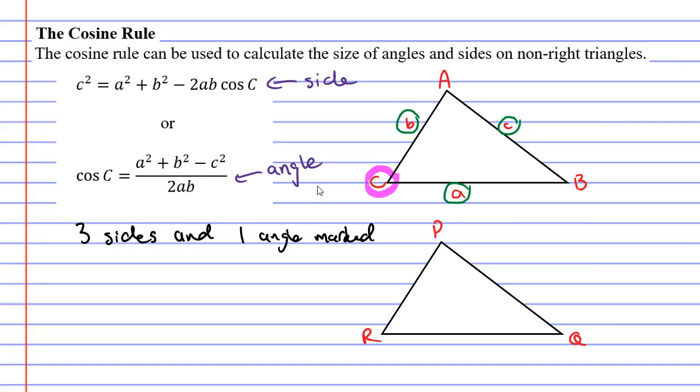Well first of all we need to label our sides. Opposite capital R is lowercase r, opposite capital P is lowercase p, and opposite capital Q is lowercase q. If we were using the cosine rule, it would mean that three of the sides were marked r, q, and p, and only one angle. So let's say angle q was marked.